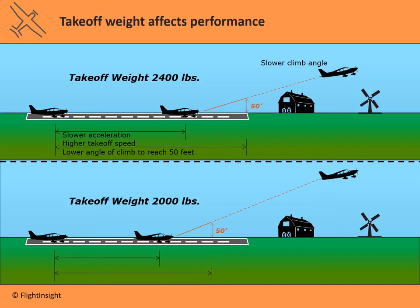Density altitude isn't the only thing that affects takeoff performance — the weight of the aircraft matters too. The pilot's operating handbook lists a maximum takeoff weight; beyond that, takeoff performance degrades. A heavier airplane requires more force to reach takeoff speed, meaning more runway to get there. And once in the air, a heavier aircraft requires more lift, so climb rate and climb angle are worse, and you'll eat up more horizontal distance before reaching a safe altitude.